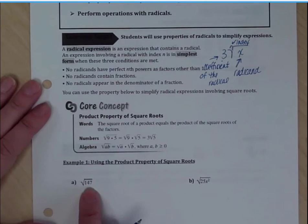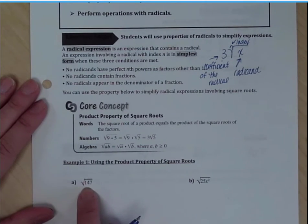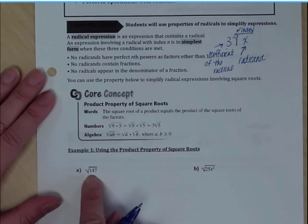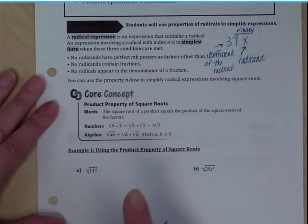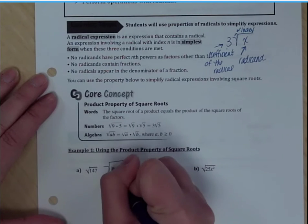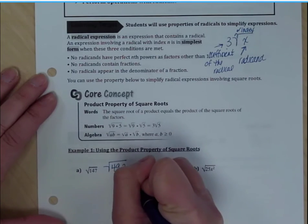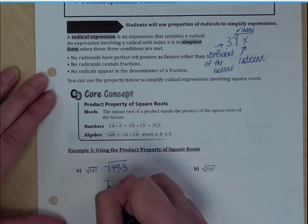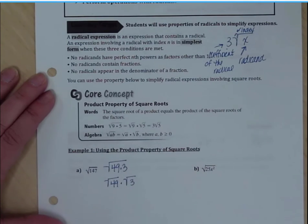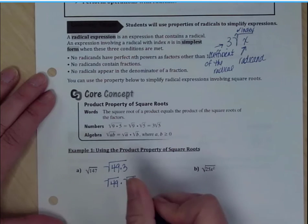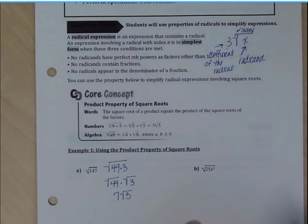I want to simplify the square root of 147. To make this a little bit simpler, I can get a list of my perfect squares and divide until I find a perfect square factor. In this case, I get 49 times 3. I can split that up to the square root of 49 times the square root of 3. And the square root of 49 is 7. So I have 7 square root of 3.